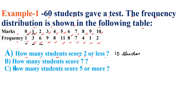Now question B: How many students scored 7? How many students got 7 marks? So see — 7 marks here — 7 students scored 7 marks.